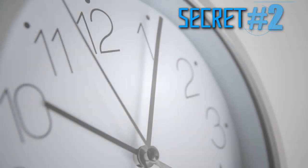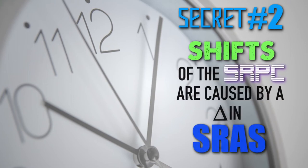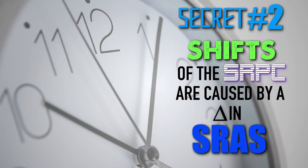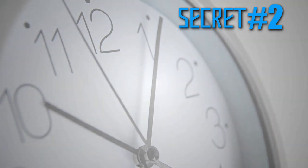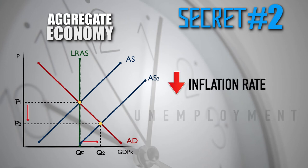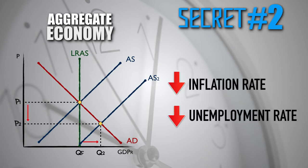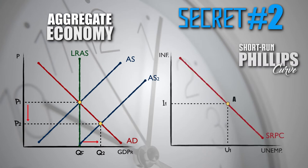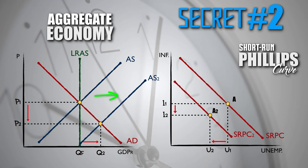Secret number two. Shifts of the short-run Phillips Curve are caused only by changes in short-run aggregate supply, and the shift of the Phillips Curve will be in the opposite direction of the shift of the short-run aggregate supply curve. For example, when a change occurs in RAP that causes short-run aggregate supply to increase, the short-run aggregate supply curve will shift to the right. To show the decrease in the inflation rate and the decrease in the unemployment rate that accompanies an increase in short-run aggregate supply, the short-run Phillips Curve will shift to the left. Rightward shift of the short-run aggregate supply curve — leftward shift of the Phillips Curve.